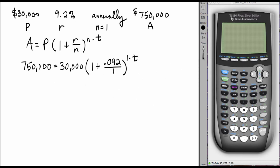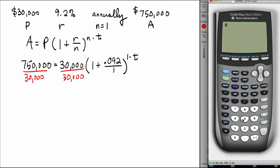Now let's simplify this equation. Divide each side by thirty thousand and calculate: seven hundred and fifty thousand divided by thirty thousand. The left hand side becomes twenty five, and on the right hand side we're left with one point zero nine two raised to the t.